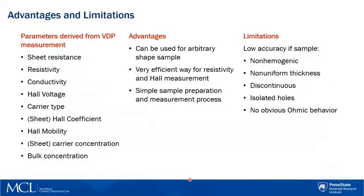To summarize, users can obtain a range of different physical parameters of their sample, including sheet resistance, resistivity, conductivity, Hall voltage, carrier type, Hall coefficient, Hall mobility, carrier concentration, and bulk concentration.